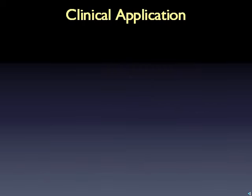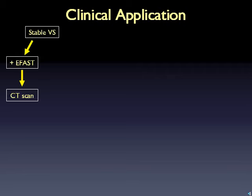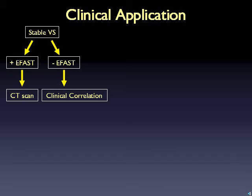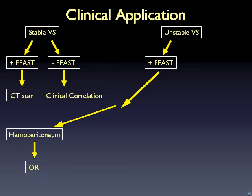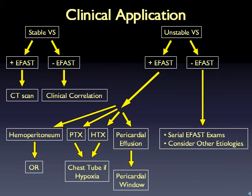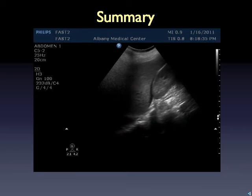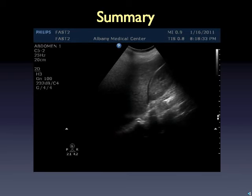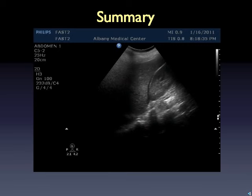How to apply this clinically: stable vital signs with a positive eFAST means imaging to refine management — is the hemothorax or pneumothorax large enough for a chest tube? Is there a blush for angio? What do the Hounsfield units indicate about a blunt pericardial effusion? Stable vital signs with a negative FAST — determine need for imaging based on the clinical picture. Unstable vital signs with a positive FAST means OR for hemoperitoneum, chest tube for hemothorax or pneumothorax, and emergent pericardial window for pericardial effusion. Unstable with a negative FAST — consider other etiologies. Carefully explore each region back to front, side to side, to not miss subtle findings, and develop a three-dimensional understanding of structural relationships in each view.